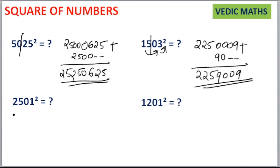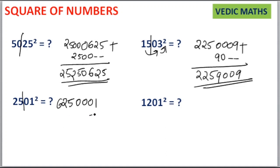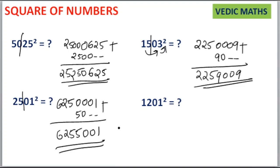Next is 2501 squared. Separate it as 25 and 01. 25 squared is equal to 625. Then 1 squared is equal to 1 — write it as a 4-digit term: 0001, because RSS has 2 digits. Then 25 into 1 is 25, and 25 into 2 is 50. Leave the units place and 10th place, then write 50 here. Adding together gives you 6255001 as your answer.